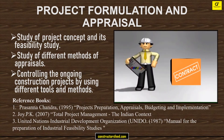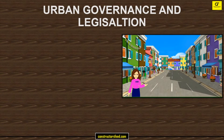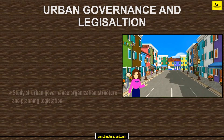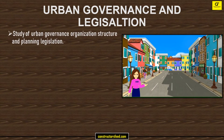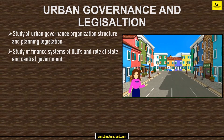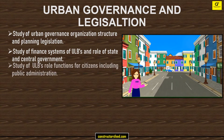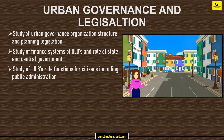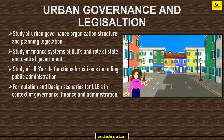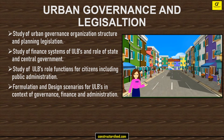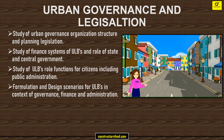Urban governance and legislation: study of urban governance organization structure and planning legislation, study of finance systems of Urban Local Bodies (ULBs) and the role of state and central governments, and study of ULBs' roles and functions for citizens including public administration, formulation, and design scenarios for ULBs in the context of governance, finance, and administration.